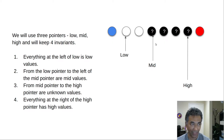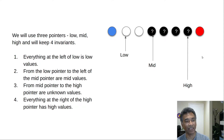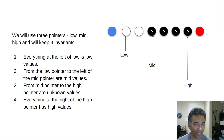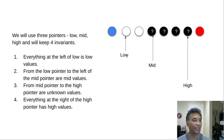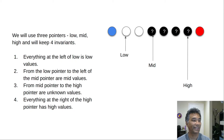From the mid pointer to the high pointer, including both, all values are unknown — we haven't revealed those yet. Everything after the high pointer contains high values, which are red. Another way to think about it: the low pointer always points to the first mid value, or the first position after all low values. Whenever we find a low value, we swap it with the element at the low pointer.